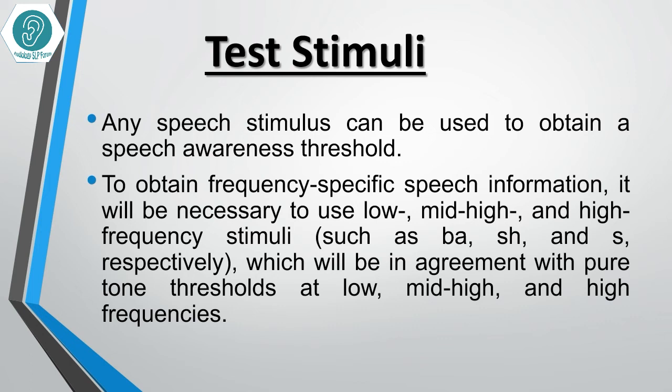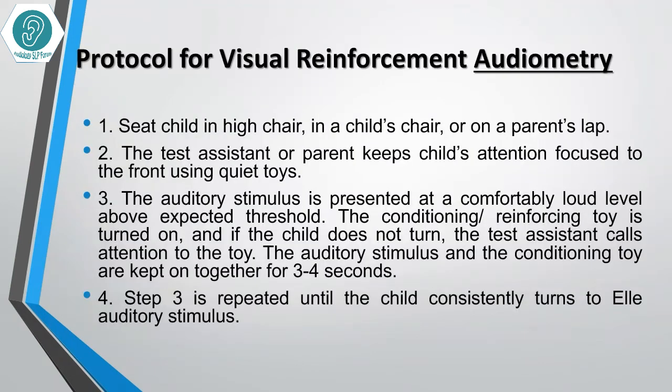Any speech stimulus can be used to obtain a Speech Awareness Threshold (SAT). To obtain frequency-specific speech information, it will be necessary to use low, mid-high, and high frequency stimuli such as /ba/, /sh/, and /s/ respectively, which will be in agreement with pure tone thresholds at low, mid-high, and high frequencies.